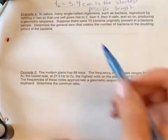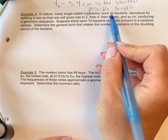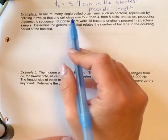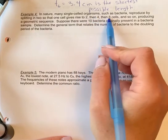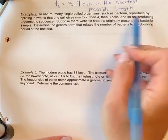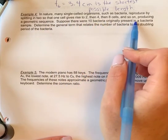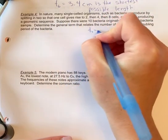Example four: In nature, many single-celled organisms such as bacteria reproduce by splitting in two, so that one cell gives rise to two, then four, then eight, and so on, producing a geometric sequence. Suppose there were 10 bacteria originally present, so that would mean that term one equals 10.